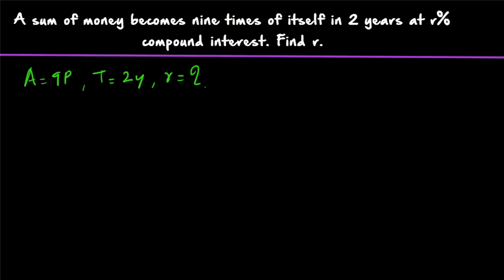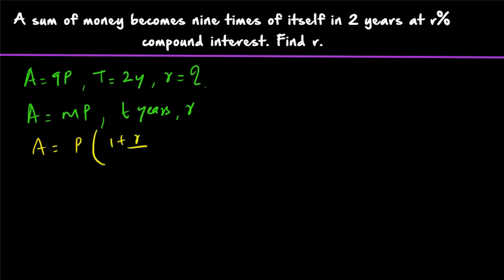These types of questions will come in competitive exams, so let's derive a shortcut formula. We can say the amount is becoming M times the principal in time T years, and R is the rate of interest. We are trying to derive a common formula for doing these kinds of problems. Amount is becoming MP in T years; we have to find the rate of interest. Now we can substitute the formula: A = P × (1 + R/100)^T. So MP = P × (1 + R/100)^T.